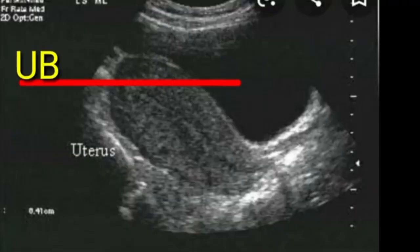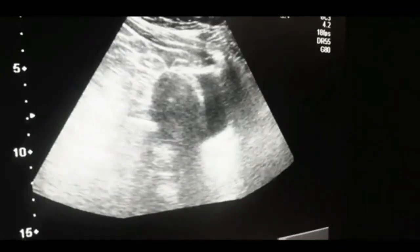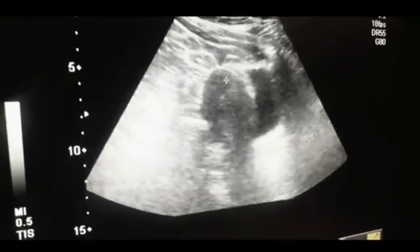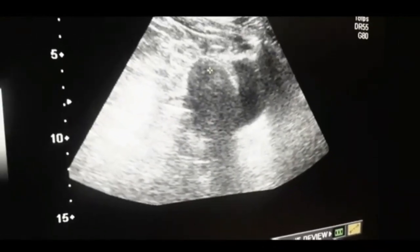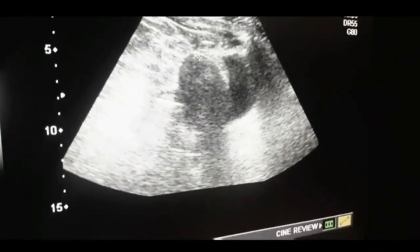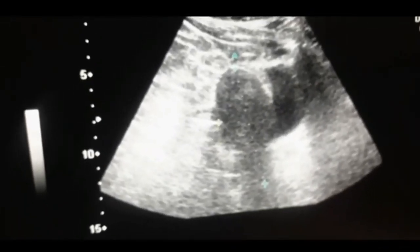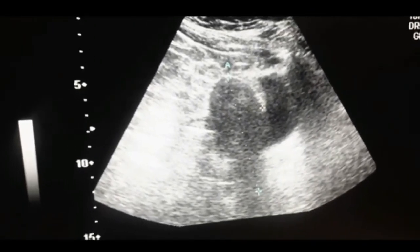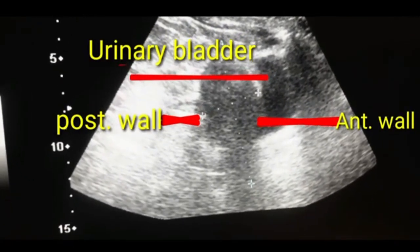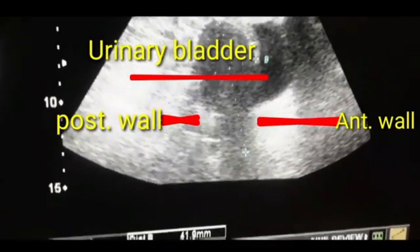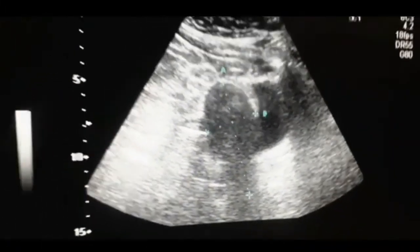The uterus is anteverted and you can appreciate the endometrium as well. This is a live case about the anatomy of the uterus. You can see the anteverted uterus with the bladder in front, the posterior wall, anterior wall, as well as the cervix. This is the craniocaudal diameter and then the anteroposterior diameter of the uterus.